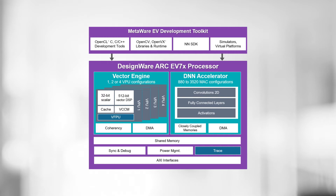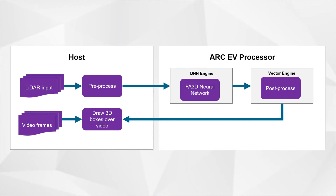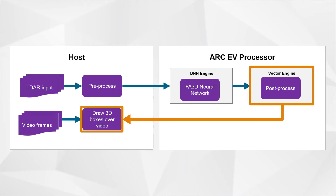To run the FA3D algorithm efficiently on an embedded system, we will make use of the DNN accelerator in the EV processor. The EV processor contains two main parts: the vector engine and the DNN engine. The DNN engine accelerates the execution of the FA3D neural network algorithm, and the vector engine is used to drive the DNN by reading the data from the host, sending it as inputs to the DNN engine, and post-processing the outputs.